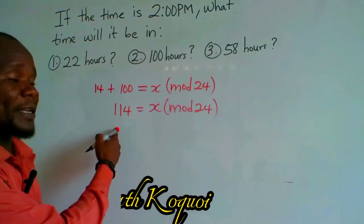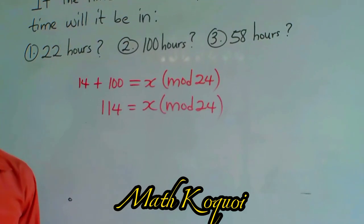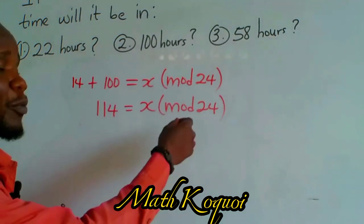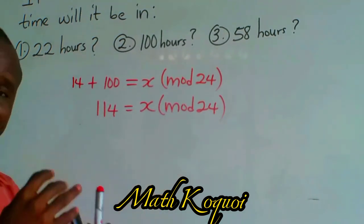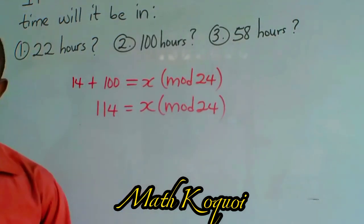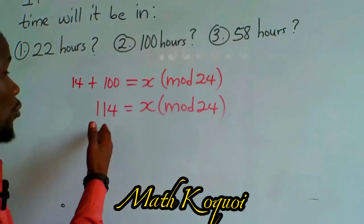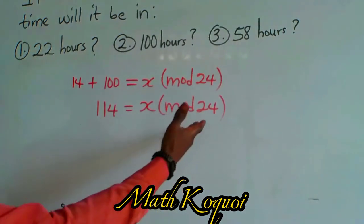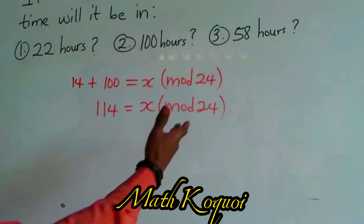We are going to divide this 114 by 24. So we are going to say 24 into 114, how many times? What number would multiply by 24 to get exact 114 or close to 114? If we try 5, it would be more, so let's try 4.